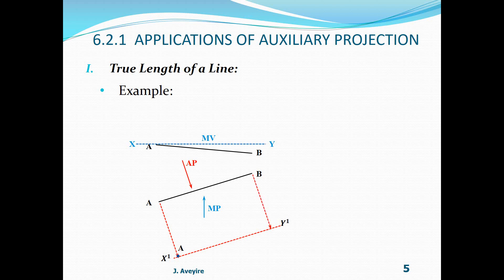We then project B on the plan and look at the distance of B in the mutual view with respect to XY. It is negative, therefore when we go to our projector for B we take a minus, placing it in the opposite direction. We then get point B, and the line AB is now drawn — that is the true length of the line.